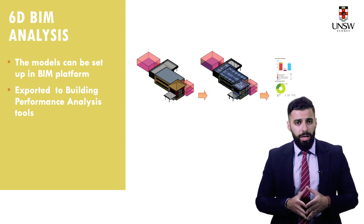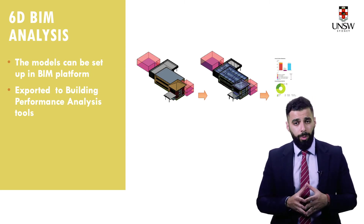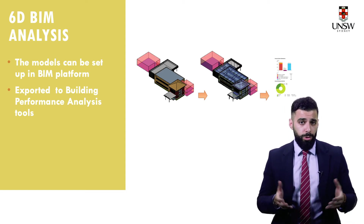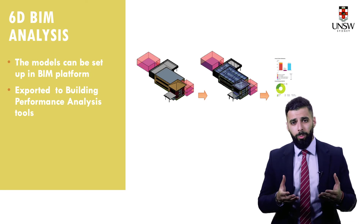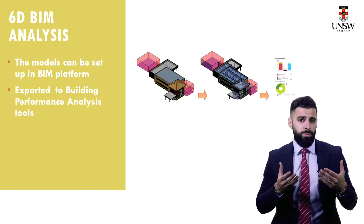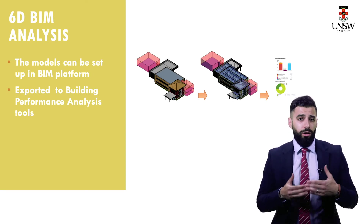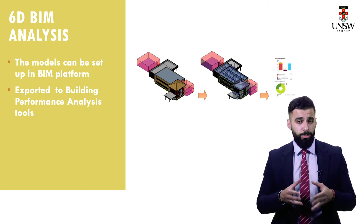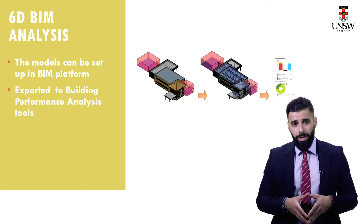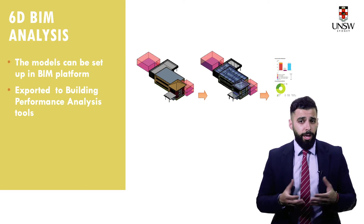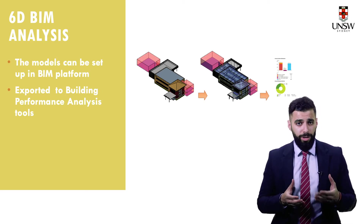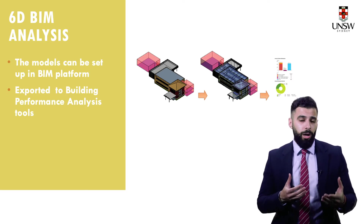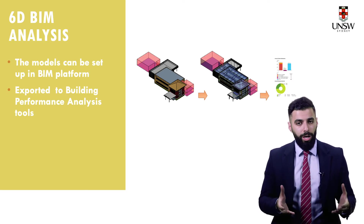The second application is enhancing the selection of appropriate mechanical systems that have low energy cost requirements through the use of simulations. This can help reduce the operating cost of the building by reducing the electricity required to power it. The third application is simulating the adoption of renewable sources of energy such as solar panels to allow you to better optimize their designs.